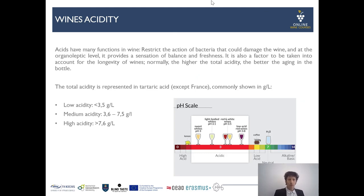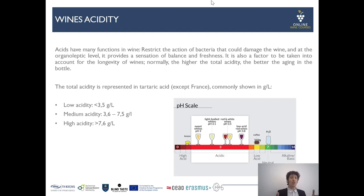Acidity in wine is quite important. Organic acids have many functions: they restrict the action of unwanted bacteria and microorganisms that could damage the wine. On the organoleptic level, acidity provides a sensation of balance and freshness, especially when residual sugar is present. A bit more acidity can make the wine more buffered or round. Acidity is also a factor in aging capacity — normally the higher the total acidity, the better the wine can age in the bottle.